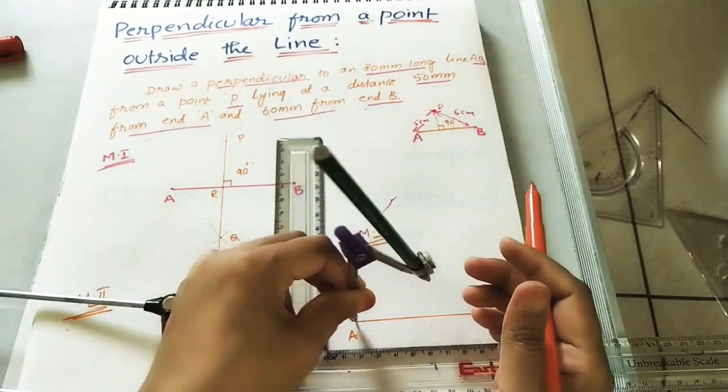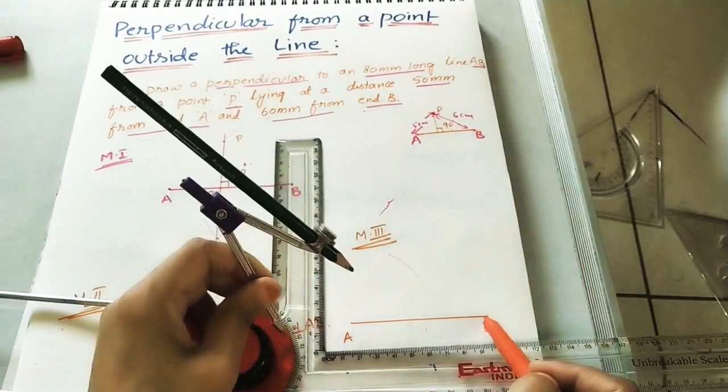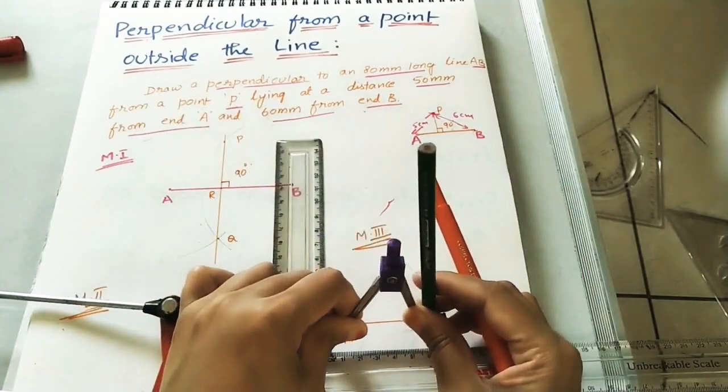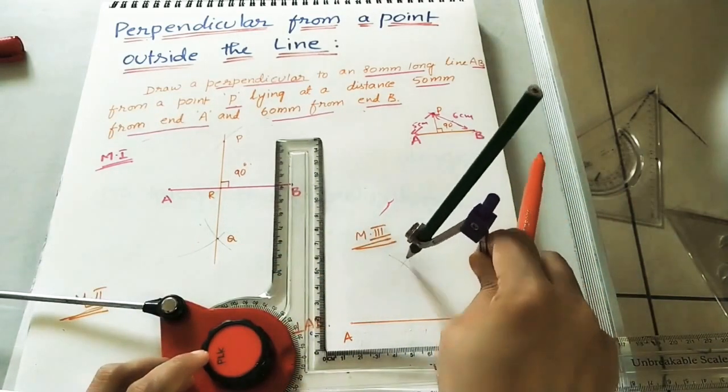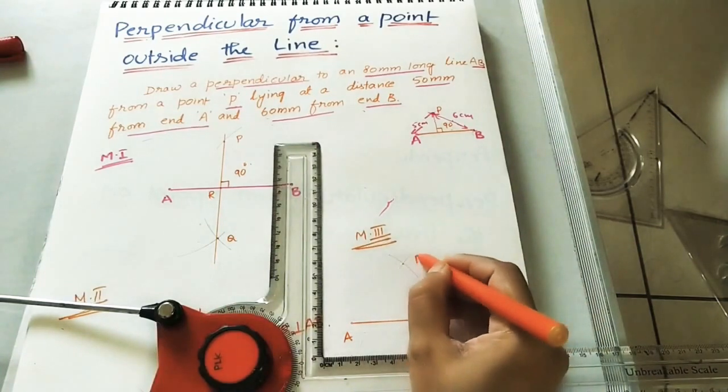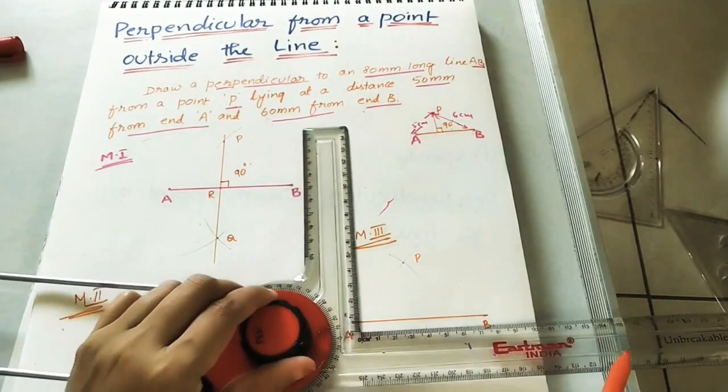Just do an arc. From B, it is 6 cm. Just take by using the compass. B as center, cut this arc. You will get P point. You have to do the perpendicular with this.